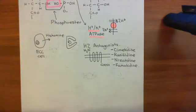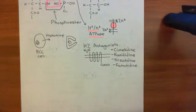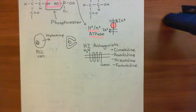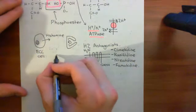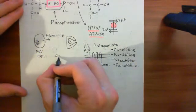Welcome back to this next video in which we are discussing gastric acid secretion. We've discussed how enterochromaffin-like cells release histamine at a basal level, which stimulates parietal cells that are in the oxyntic glands of the stomach. The oxyntic glands is just another name for the gastric glands.